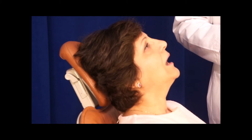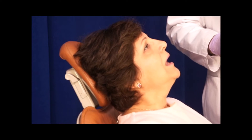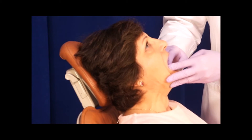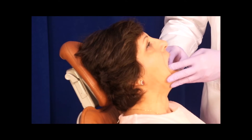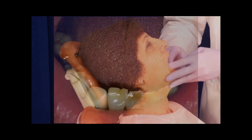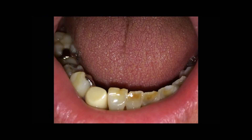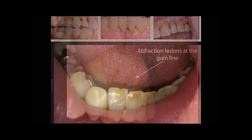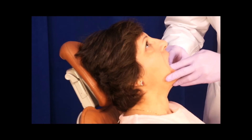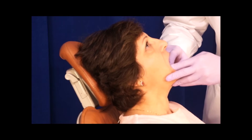Next I look at the dentition. The first thing I want to know is signs of clenching or bruxing. I am going to look for fractured teeth, wear facets, abfractions, or even gingival clefting. All of these would indicate clenching or bruxism.